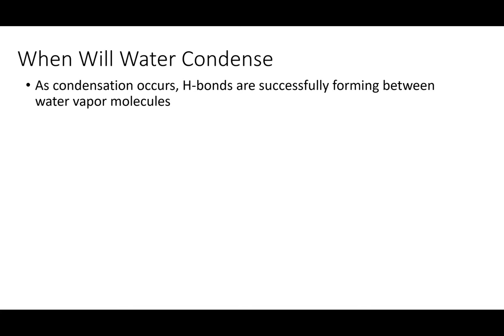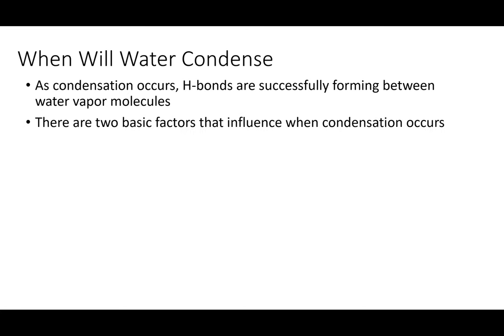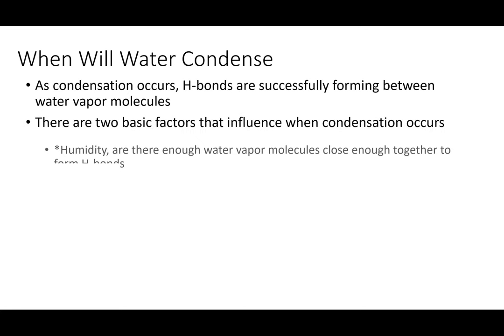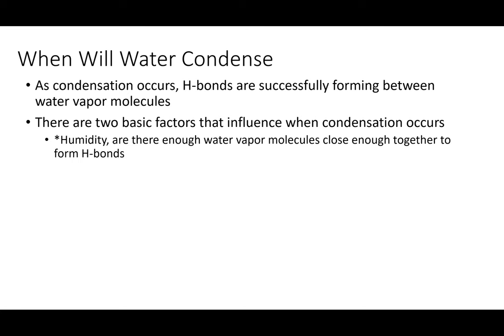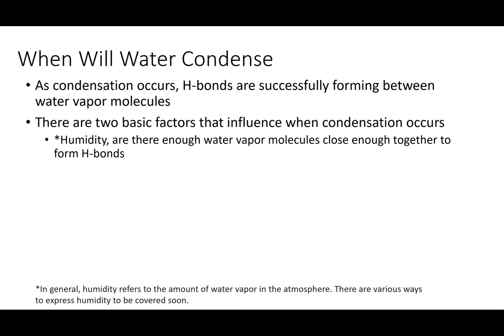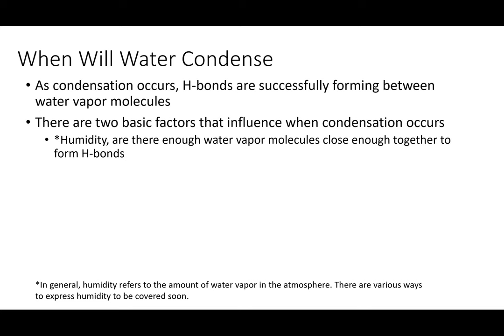How do we get condensation? It goes from a vapor to a liquid. You need to have hydrogen bonds form. There are two reasons why hydrogen bonds form: one is temperature, and one is how many water particles are there that might want to join together and liquefy — to condense. Humidity in general describes how much water vapor there is in the air.